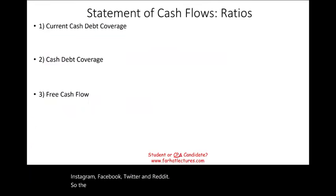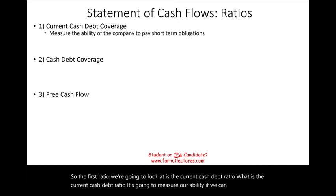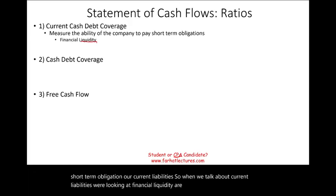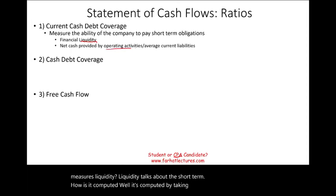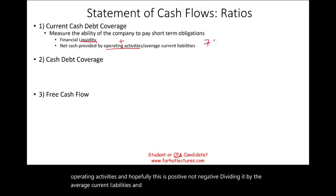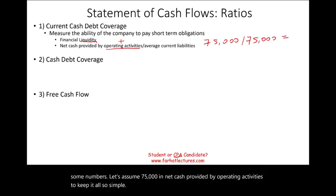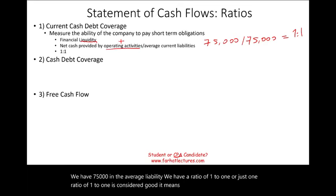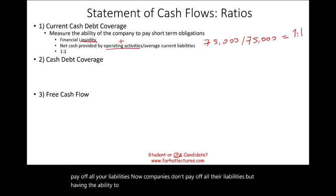The first ratio we're going to look at is the current cash-debt ratio. It measures our ability to pay off our short-term obligations — our current liabilities. This ratio measures liquidity, which talks about the short term. It's computed by taking net cash provided by operating activities divided by average current liabilities. For example, $75,000 in net cash from operations divided by $75,000 in average current liabilities gives us a ratio of one-to-one, which is considered good.